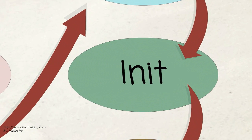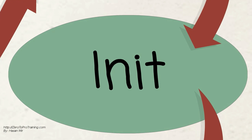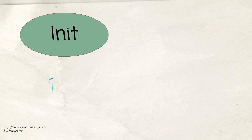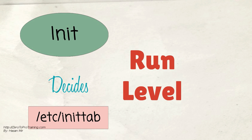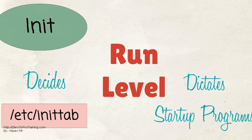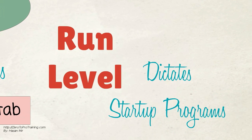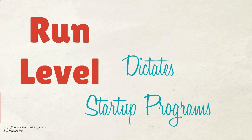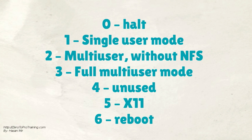Let's talk about the init process. It looks at the /etc/inittab file to decide the Linux run level. Run levels decide which initial programs will be loaded at startup. The available run levels are: 0 - Halt, 1 - Single user mode, 2 - Multi-user without NFS, 3 - Full multi-user mode, 4 - Unused, 5 - X11, and 6 - Reboot.